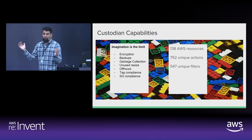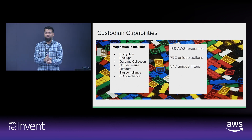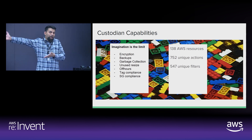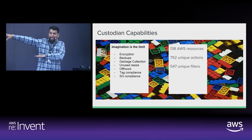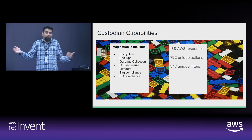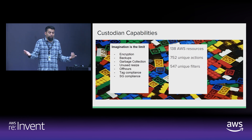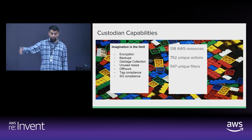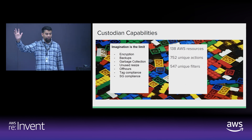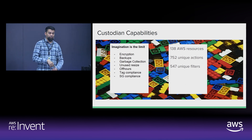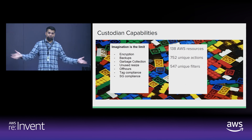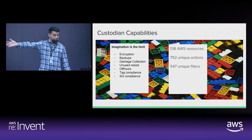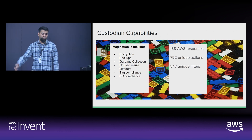People often ask me what Custodian can do — and if I did the math, there are quite literally millions, billions of things you can do. Some of what we do at Capital One: we manage encryption at rest, backups, garbage collection, resource boundaries. I'll walk through some of the security policies and cost savings ones you can do with Custodian.